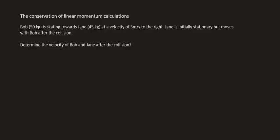Determine the velocity of Bob and Jane after the collision. We know that when two objects collide, momentum is conserved. Mathematically, that means if you add up all the momentum before the collision, it should be equal to all of the momentum after the collision.